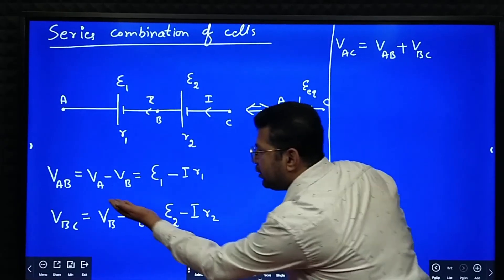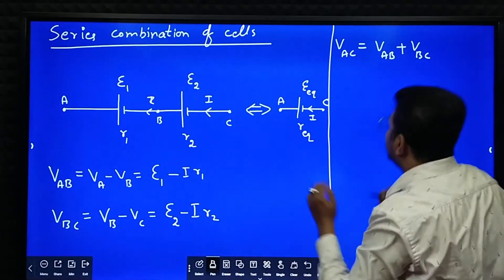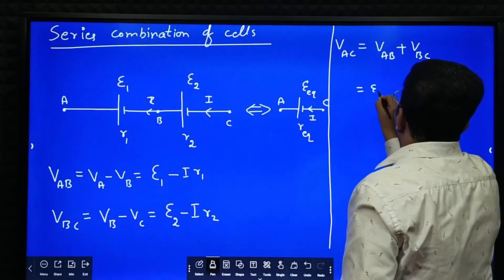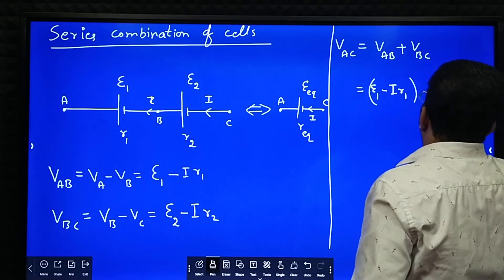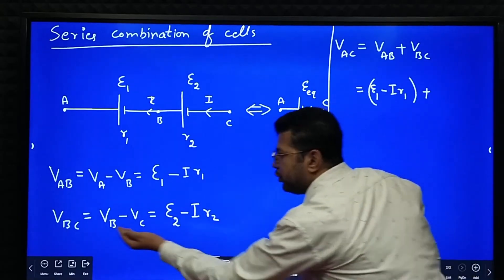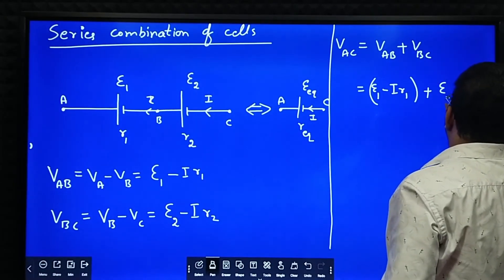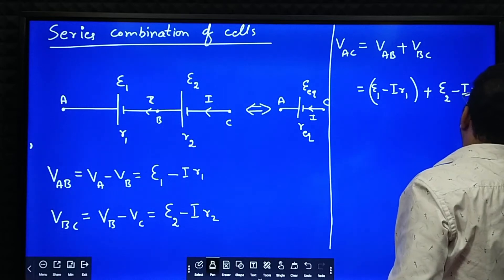What is VAB? VAB equal to E1 minus IR1 plus VBC. VBC is equal to E2 minus IR2, so E2 minus IR2.